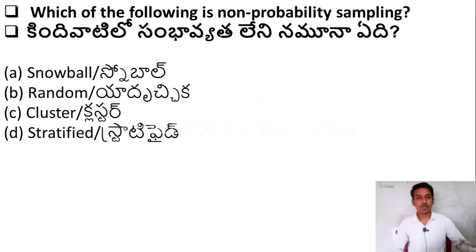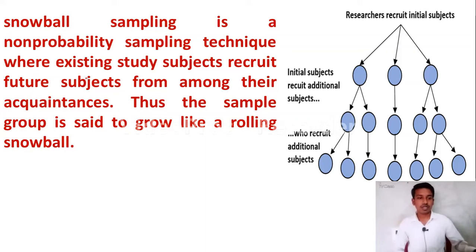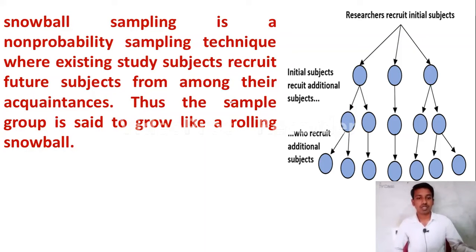The next question: which of the following is non-probability sampling? Option A — snowball sampling; Option B — random sampling; Option C — cluster sampling; Option D — stratified sampling. Random, cluster, and stratified sampling are all probability sampling, but snowball sampling is a non-probability sampling. The right answer is Option A — snowball sampling. In snowball sampling, the researcher recruits one subject, and that subject recruits other subjects, who in turn recruit more subjects. It is also known as chance referral sampling.